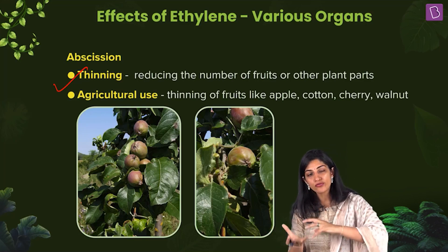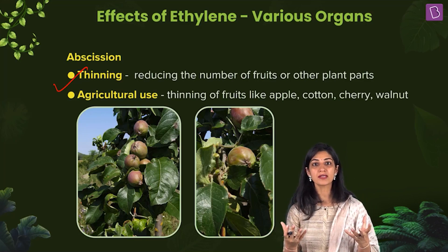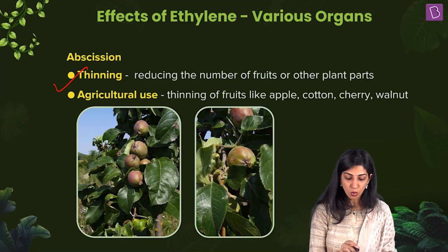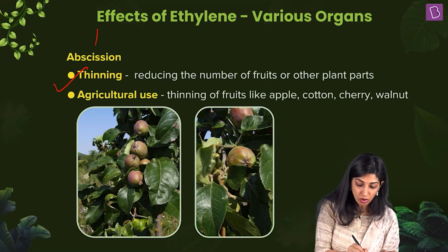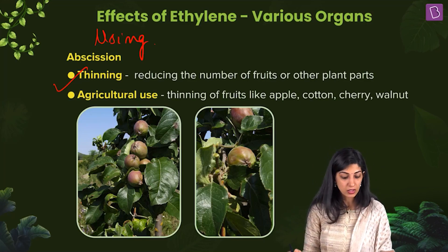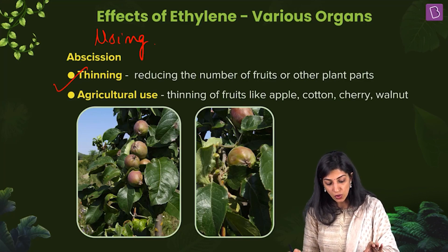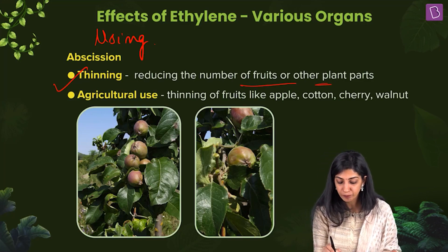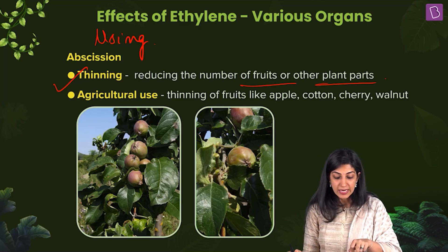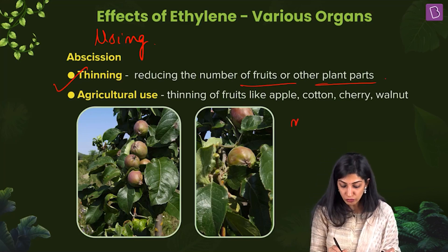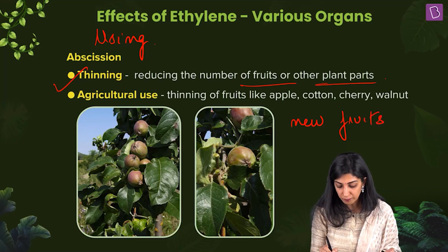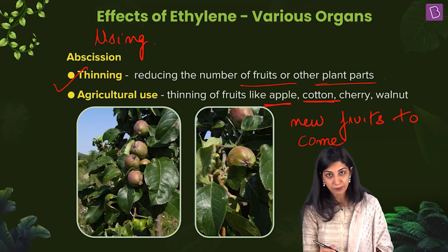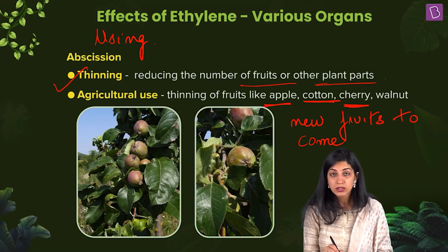The new fruits which come out get more space and grow larger as well. Thinning means reducing the number of fruits or other plant parts using ethylene's abscission effect, causing new, larger fruits to come. It is done in crops like apple, cotton, cherry, and walnut.